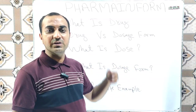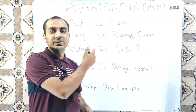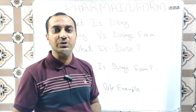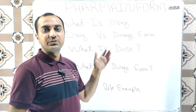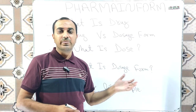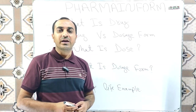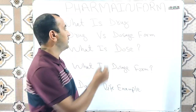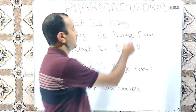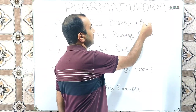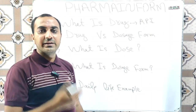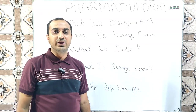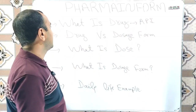What is drug? We will not go into its complex definition. We will basically take it as: drug is API, meaning active pharmaceutical ingredient. Any substance which gives a pharmacological effect is known as drug or API.